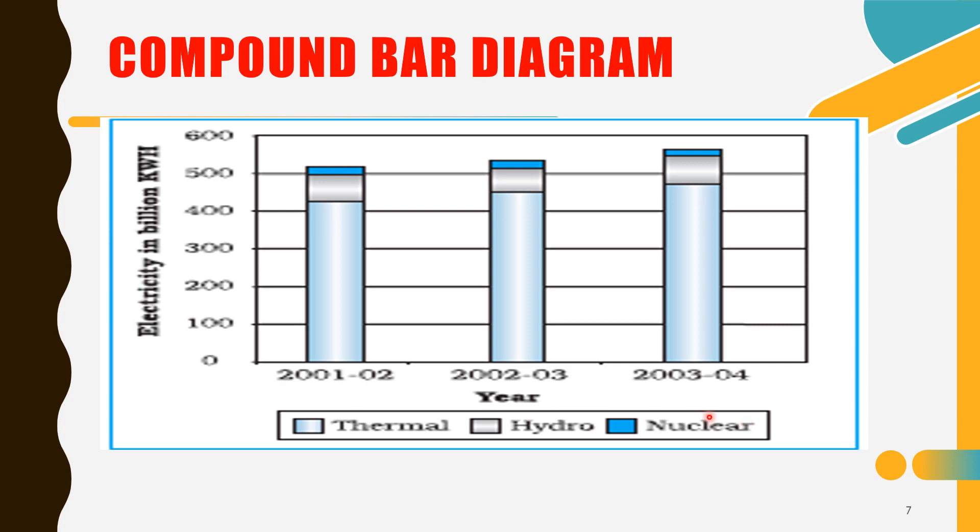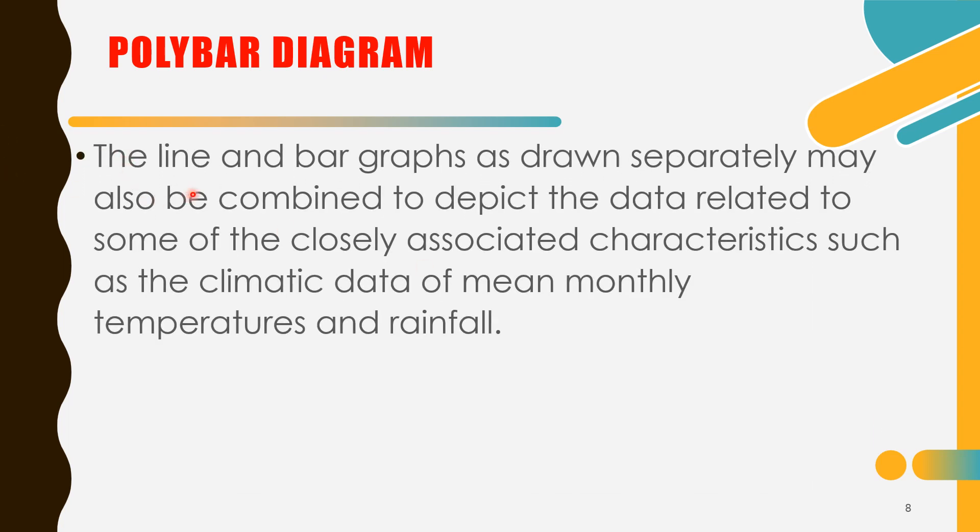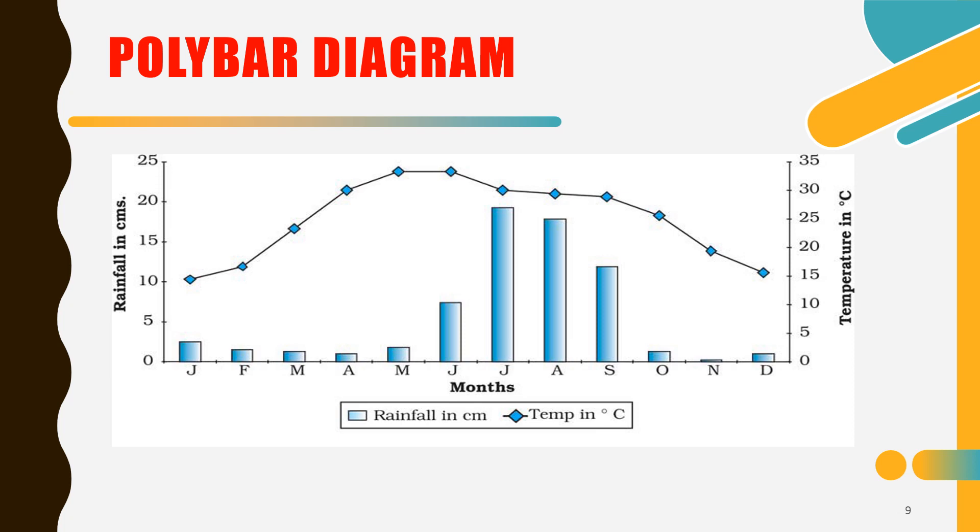Next, we have here the polybar diagram or the polybar graph. Here, the line and bar graphs are drawn separately may also be combined to depict the data related to some of the closely associated characteristics such as the climatic data of mean monthly temperatures and rainfall. This is an example of a polybar diagram. Let me show you the rainfall and the temperature at both sides. Here, the rainfall and while this is the temperature. Temperature is in the line graph and the bar is the rainfall.